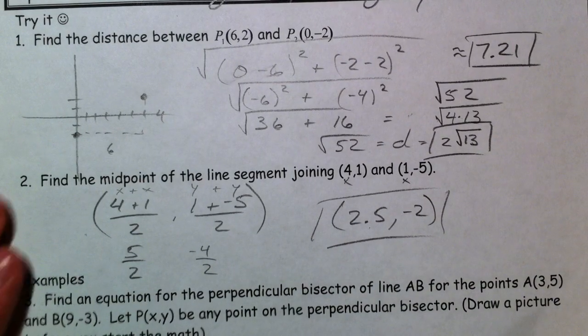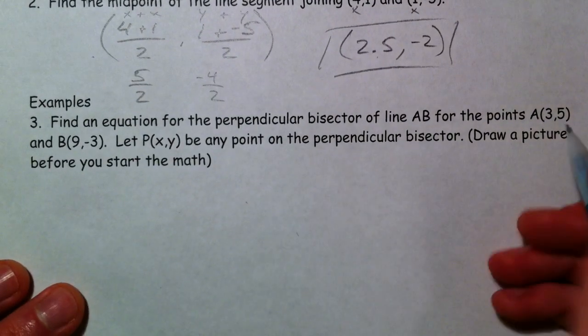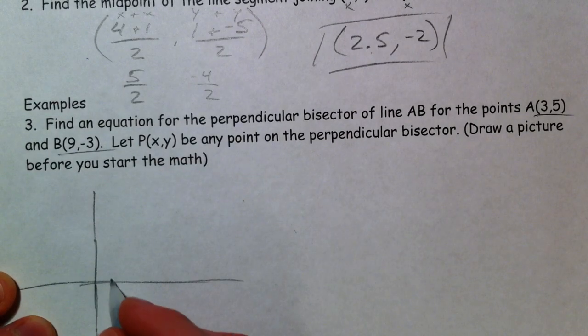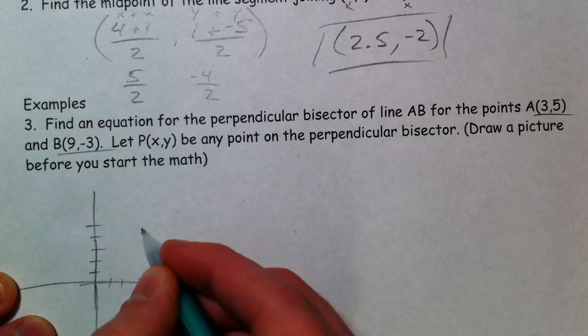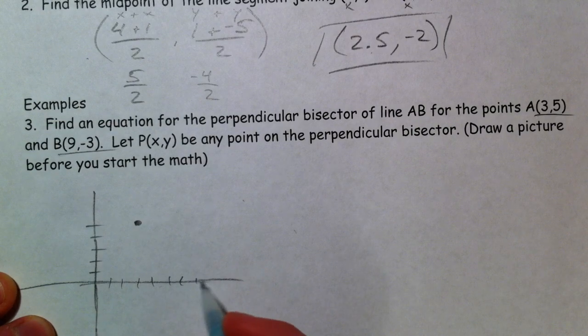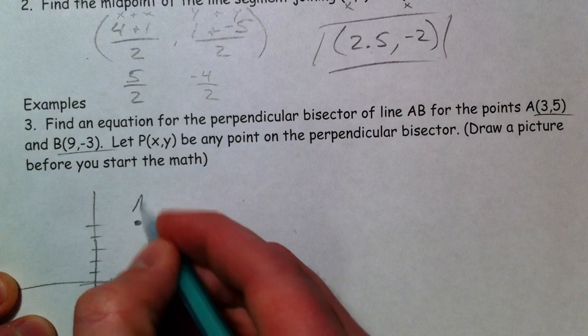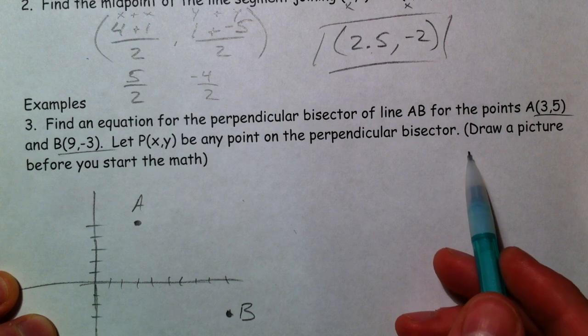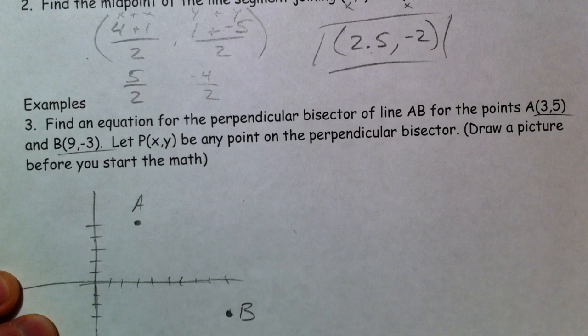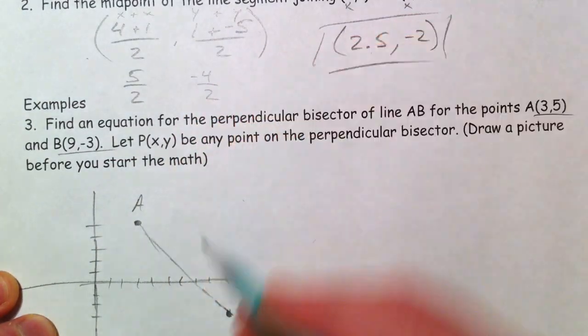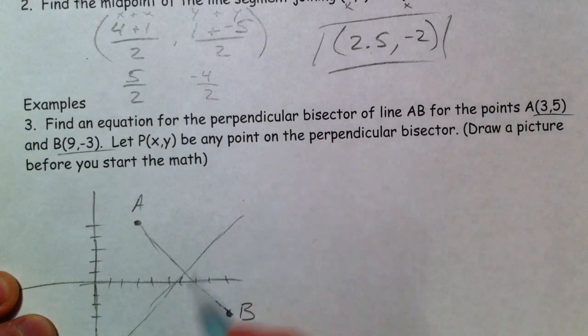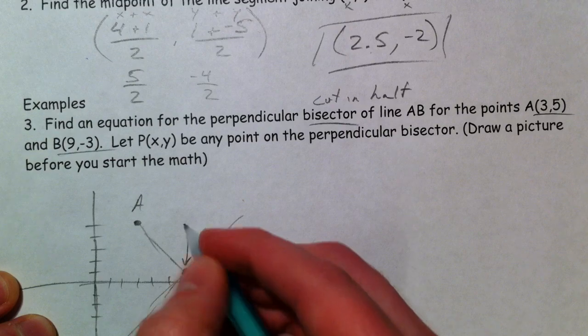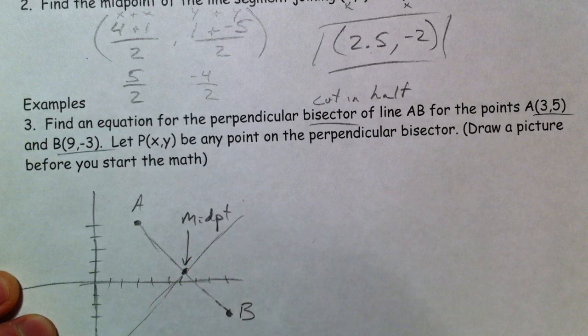So let's find the perpendicular bisector of AB. You've got 2 points: A(3, 5) and B(9, -3). I'm going to plot those, just get a quick picture so you can see what's going on. So this point A, point B. Let (x, y) be any point on the perpendicular bisector. We want AB—this line—we want to be perpendicular to that and bisecting it. Bisecting means cutting in half, so we know it's going to go through the midpoint. So first thing I'm going to find is the midpoint.